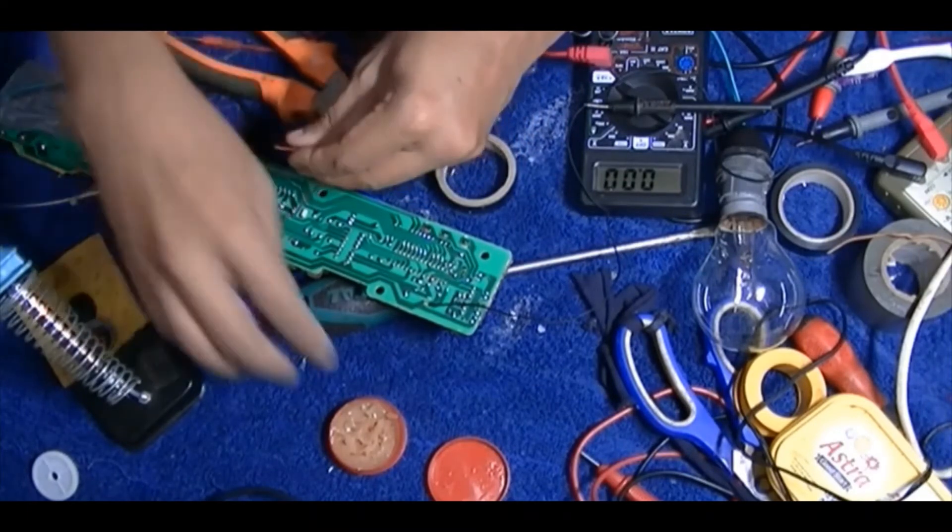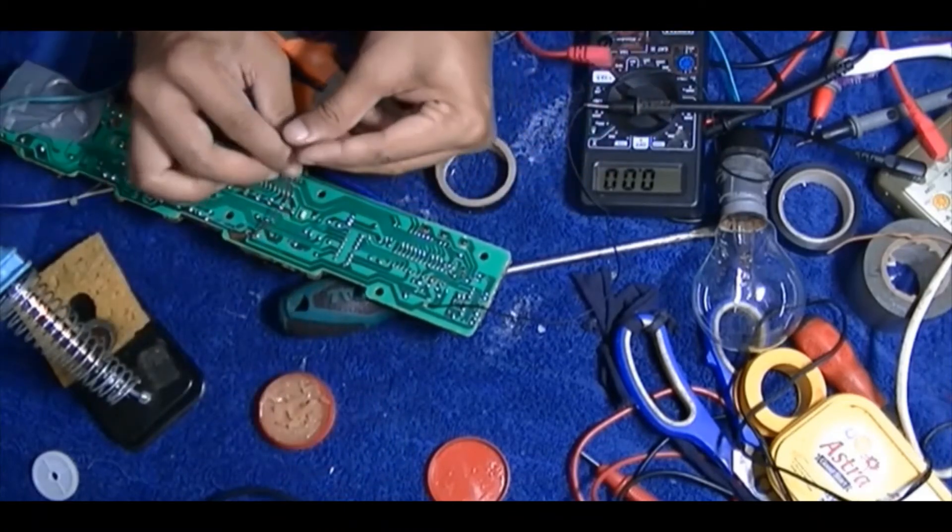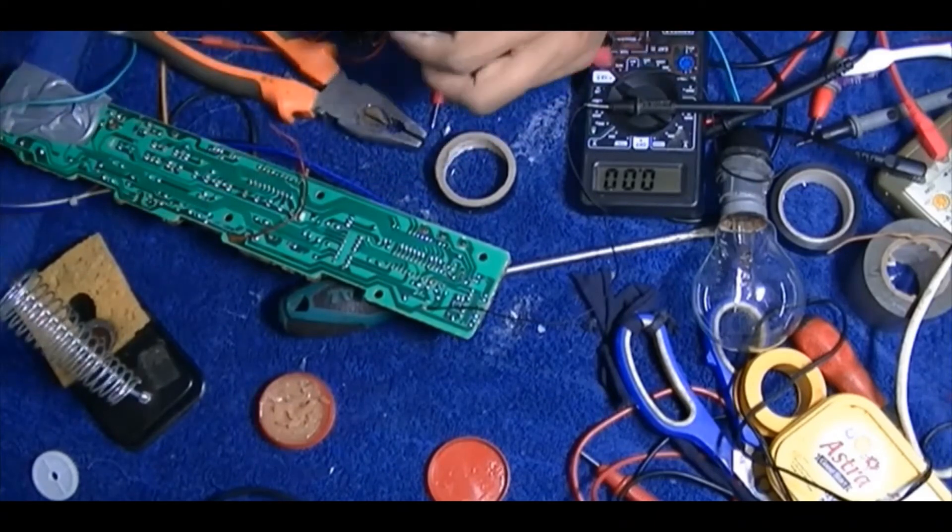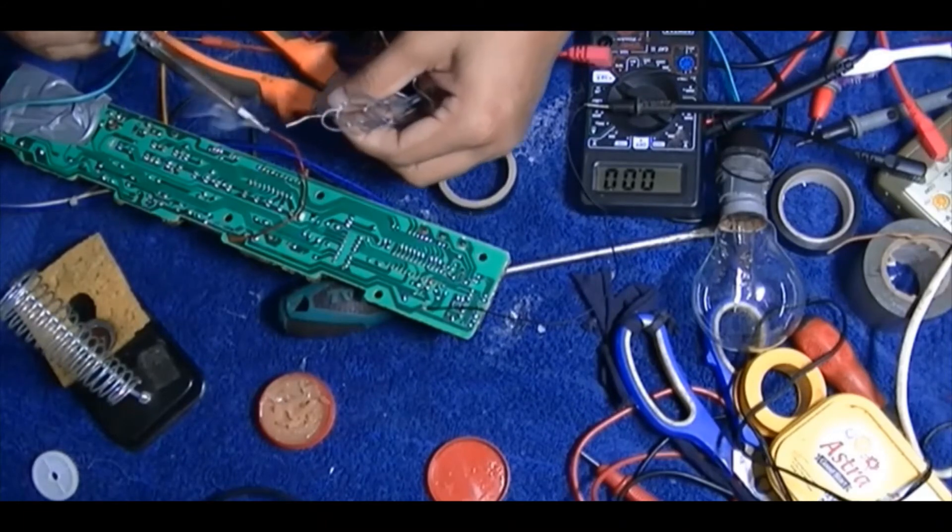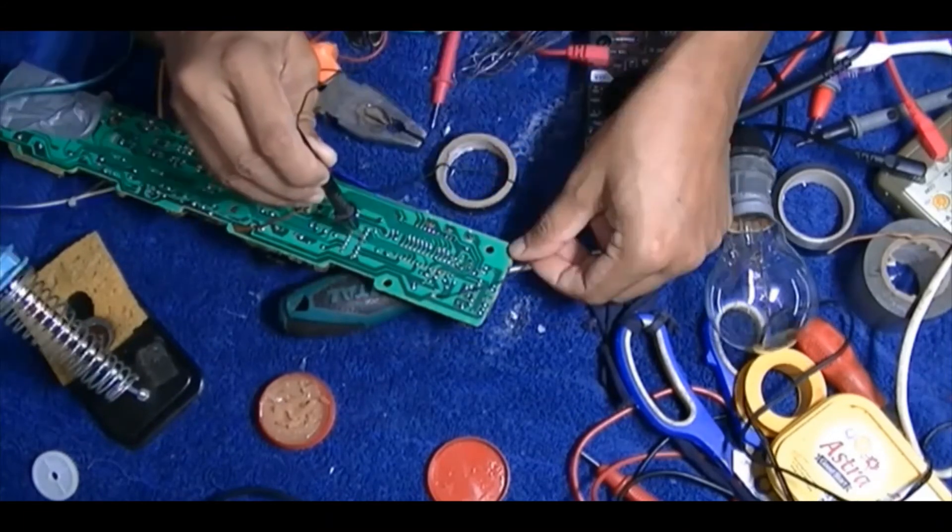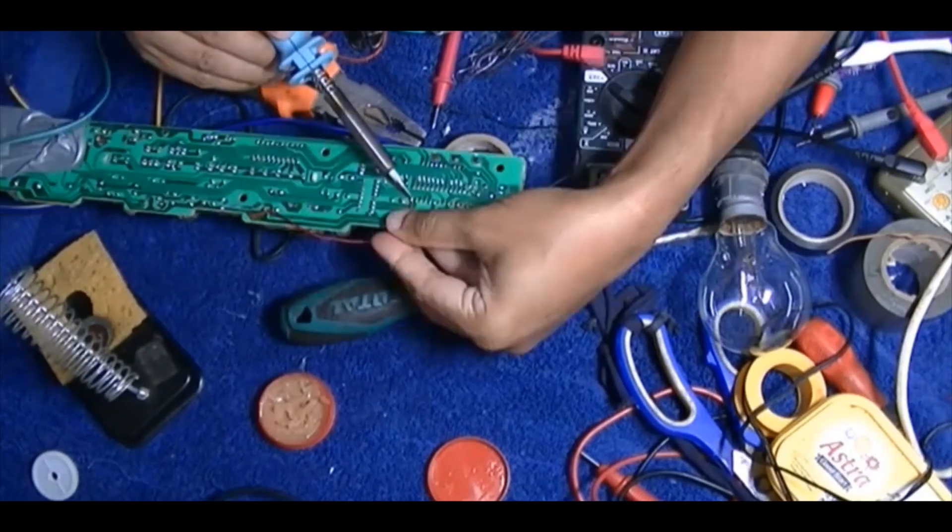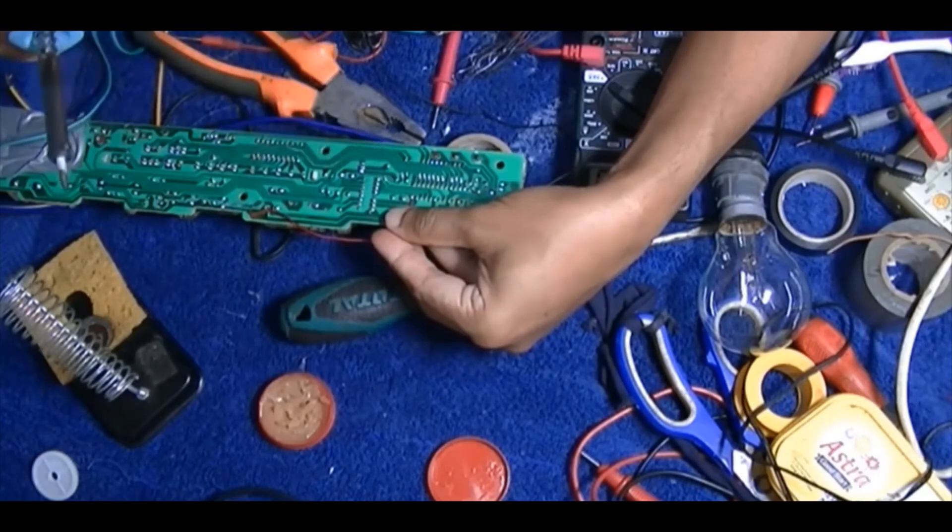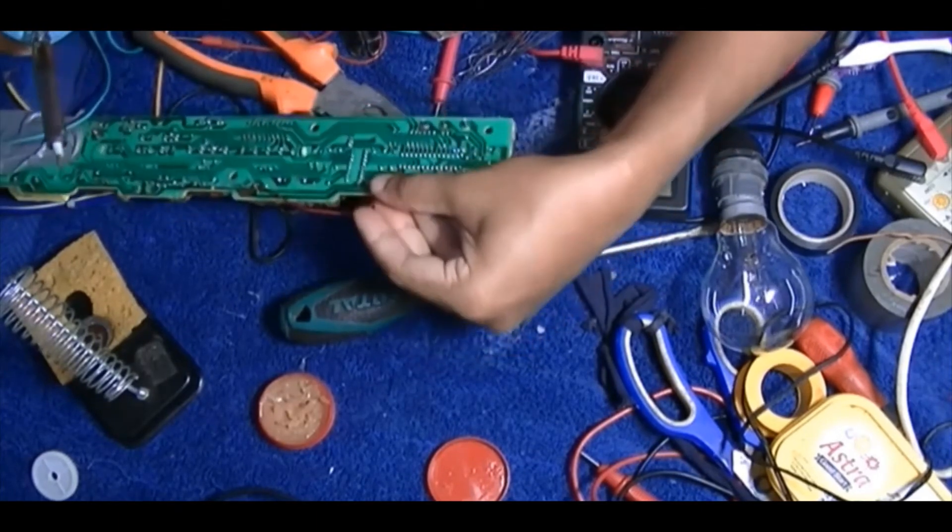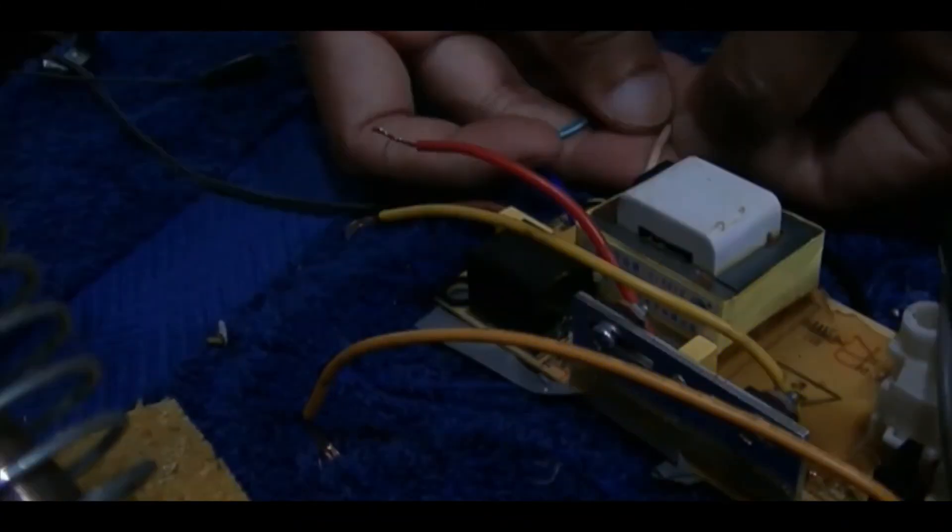Actually, that relay is also operated by the same Darlington, one of the Darlington IC pins. Now I need to test where the exact pin is, the pin of the IC. So I test it using that first rail voltage, which is 5 volts, and after that I connect that 5 volts to the exact drive pin.